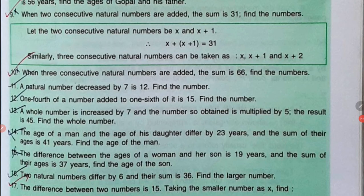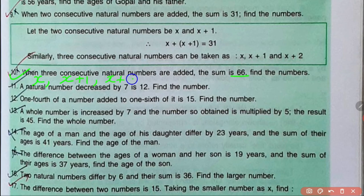Question number 10 reads as: when 3 consecutive natural numbers are added, the sum is 66. Obviously the 3 consecutive natural numbers will be x, x plus 1, and x plus 2. For example, 2, 3, and 4 can be written as 2, 2 plus 1, and 2 plus 2, giving 3 and 4 respectively. Let us solve number 10.